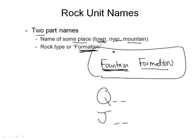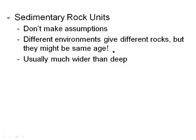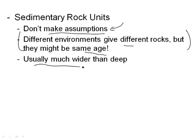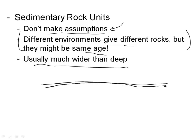There are three kinds of rock units: sedimentary, metamorphic, and igneous. For sedimentary rocks, don't make assumptions — different kinds of sedimentary rocks are formed in different places and might still be the same age. Sedimentary formations are usually very wide over a large area, but they tend to be very shallow.